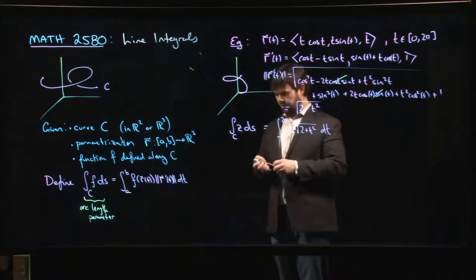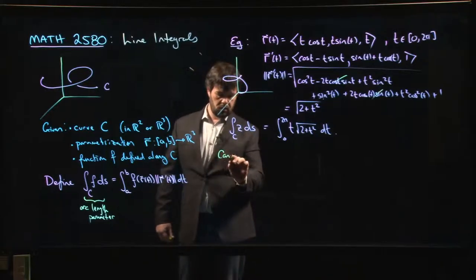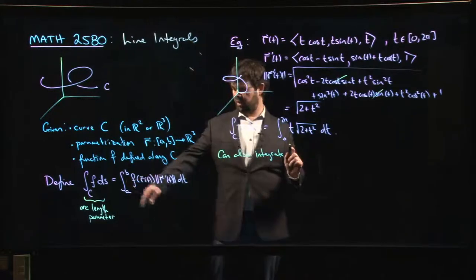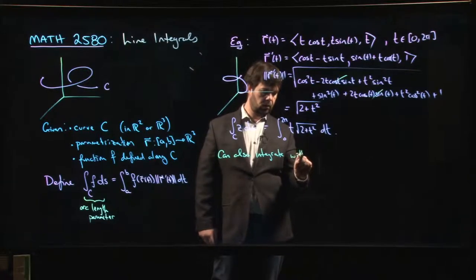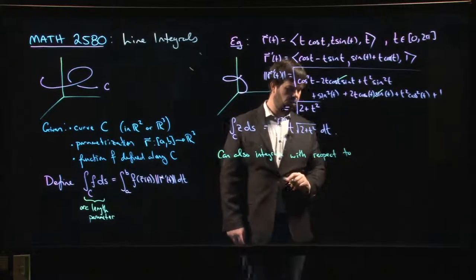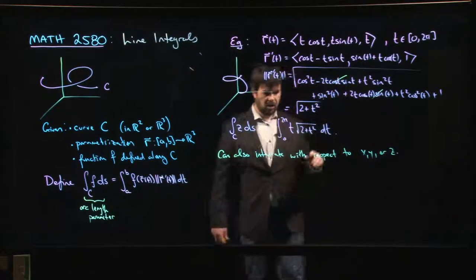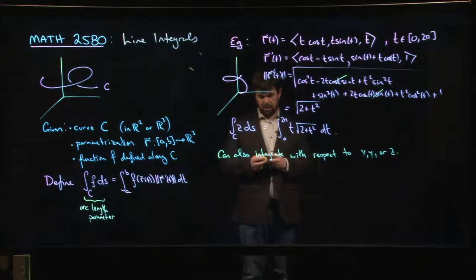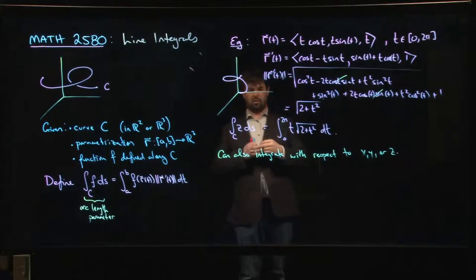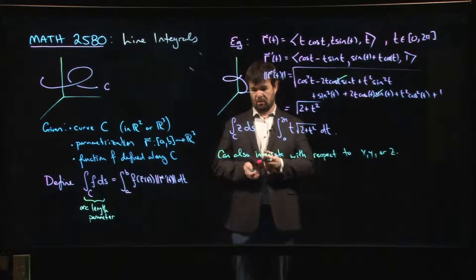There's another thing that you can do, which is occasionally useful. You can also integrate, instead of integrating with respect to arc length, you can integrate with respect to one of the coordinate variables, x, y, or z. When you're doing this, I guess you're measuring, rather than sort of measuring accumulation along the curve, you're just sort of measuring the part that changes when you move in, say, the x direction or the y direction or the z direction.